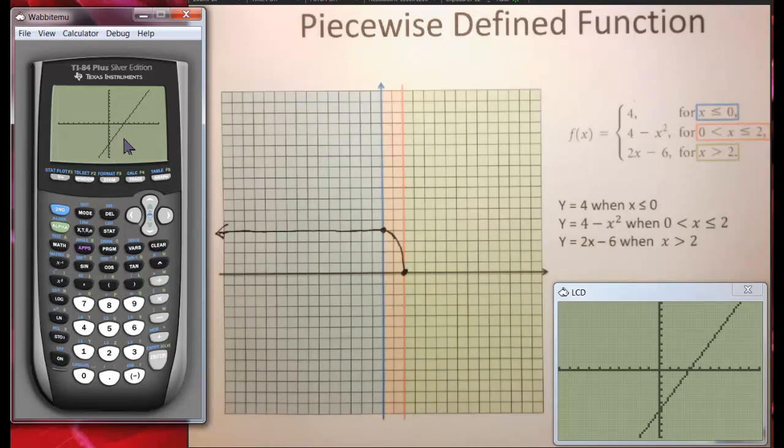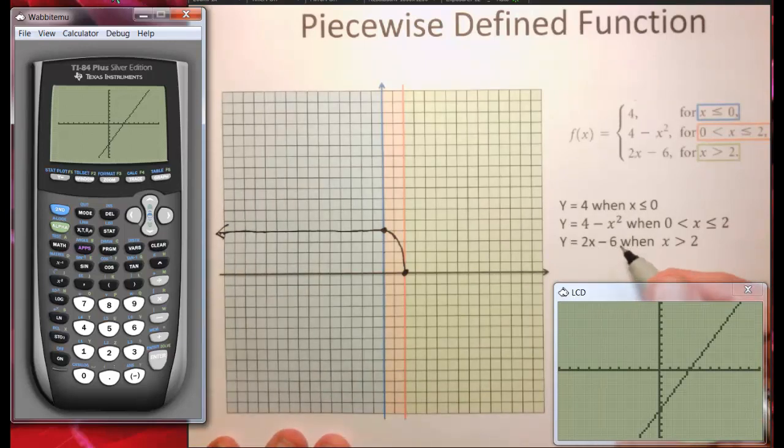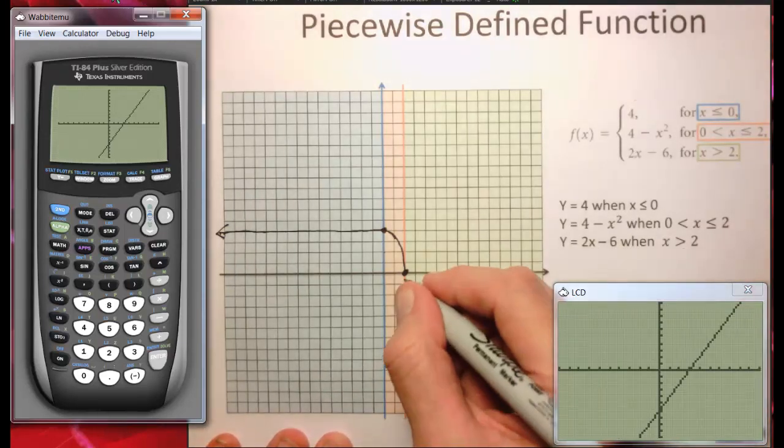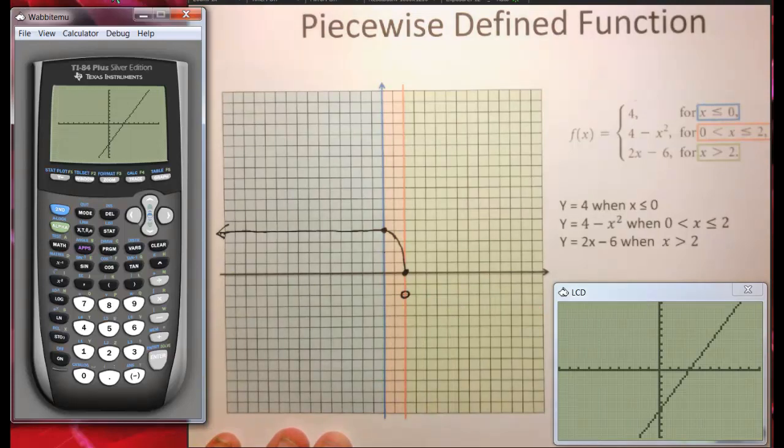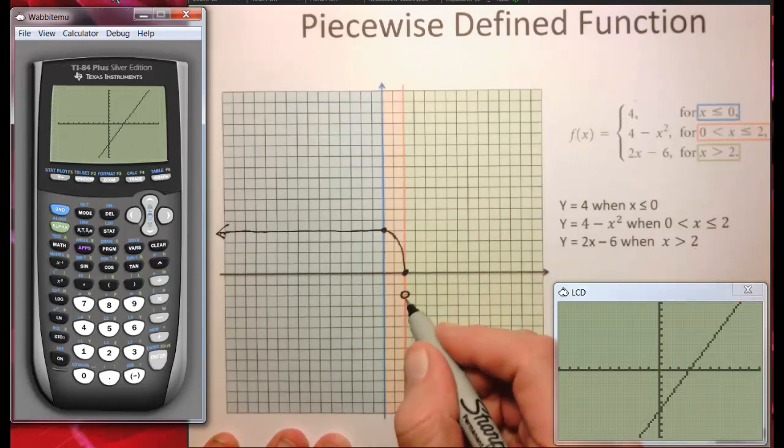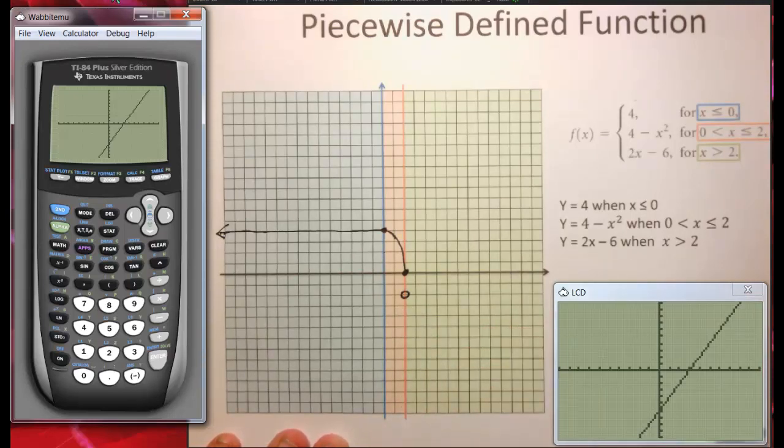If x did equal 2, then we would have 2 times 2 is 4. 4 minus 6 is negative 2. So if x equals 2, if I come down here to negative 2, I'll put an open circle because x cannot actually equal 2, therefore y cannot actually equal negative 2, but it can get really, really close. And that's what an open circle means.